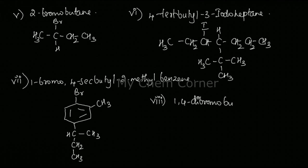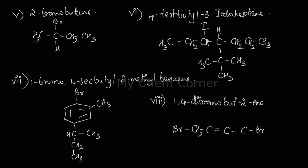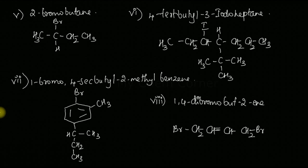The last one is 1,4-dibromobutyne — a very simple compound. Butyne is a four-carbon chain with a double bond at carbon number two. At position number one I have a Br and at position number four I also have a Br. Filling in hydrogens: CH2 here, one hydrogen here, one hydrogen here, and two hydrogens. Whenever you want to draw a structure from an IUPAC name: find the parent hydrocarbon, fill in functional groups at the given positions, then fill in the remaining hydrogens so each carbon has four bonds.